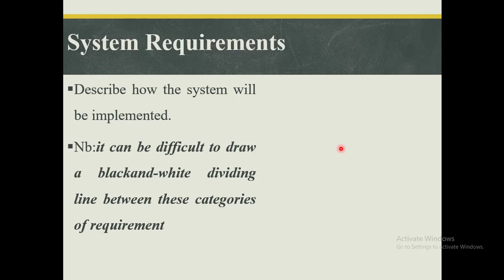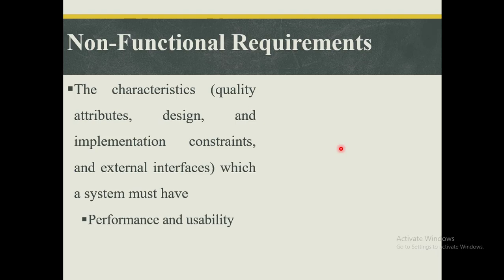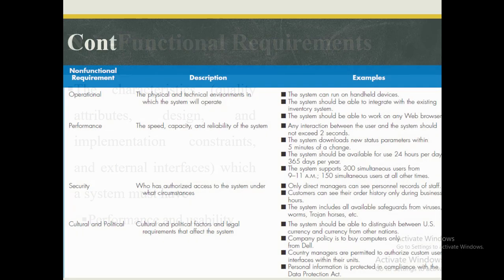System requirements describe how the system will be implemented in terms of hardware requirements and software needs. Non-functional requirements are the characteristics in terms of quality attributes, design, implementation constraints, and external interfaces that a system ought to have. Non-functional requirements affect the performance as well as the usability of a system, and they are normally broken down into four categories: operational, performance, security, and cultural and political.